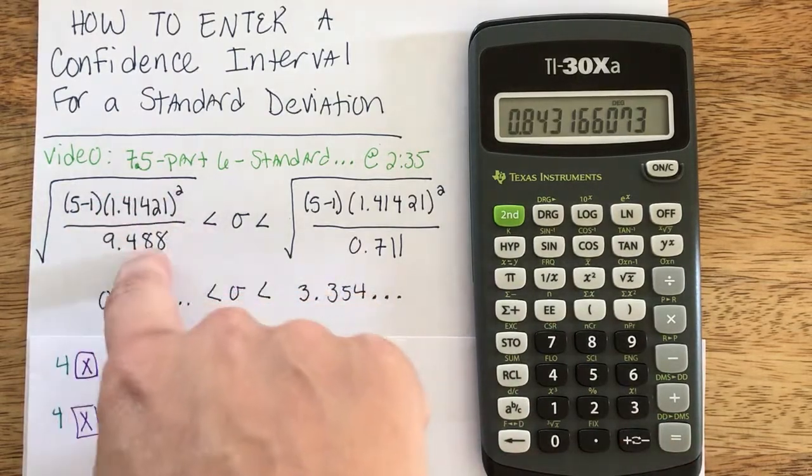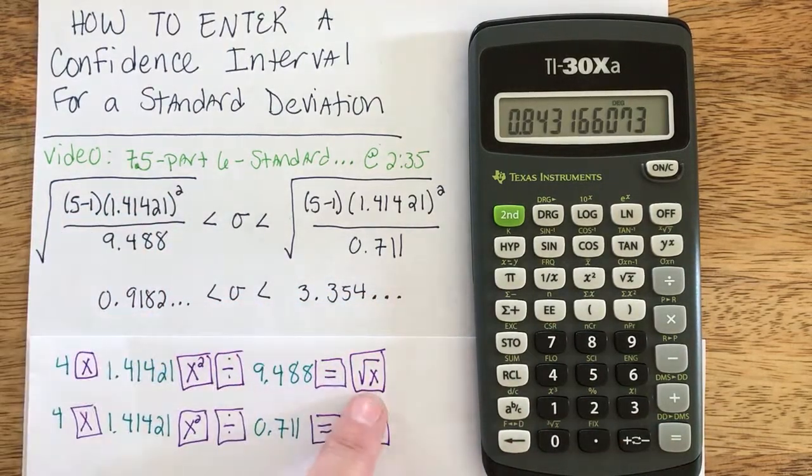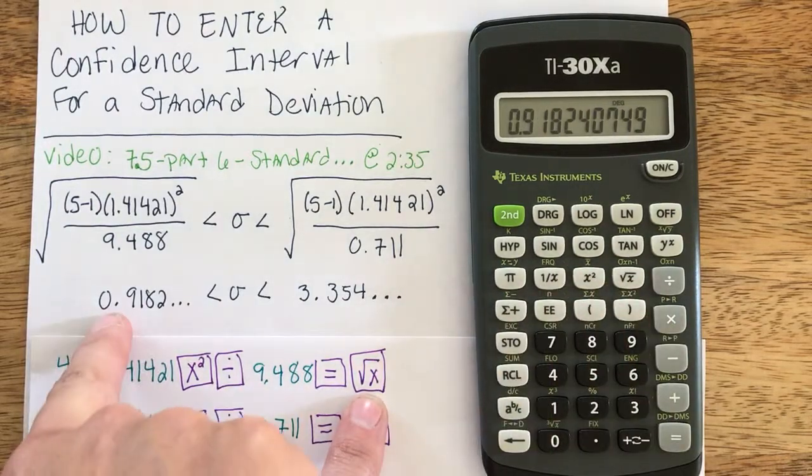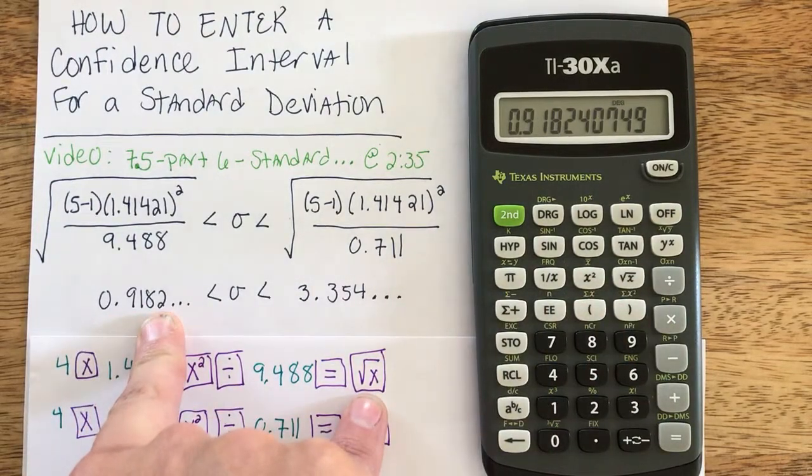But super important is we hit equal to get the interior value of the square root, so now we can hit the square root button to get the true lower end of our confidence interval.